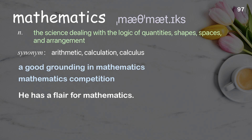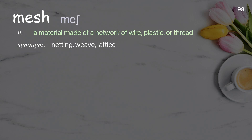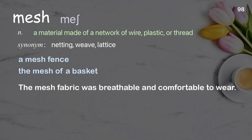Mesh: A material made of a network of wire, plastic, or thread. Examples: A mesh fence. The mesh of a basket. The mesh fabric was breathable and comfortable to wear.